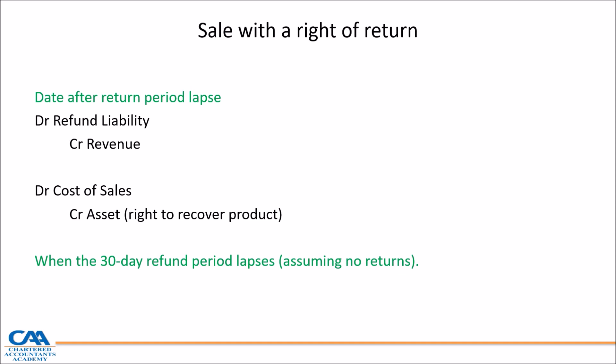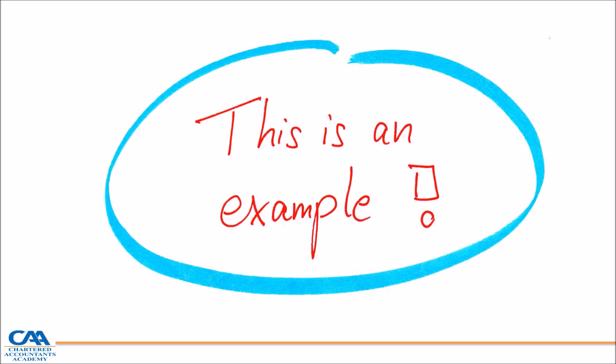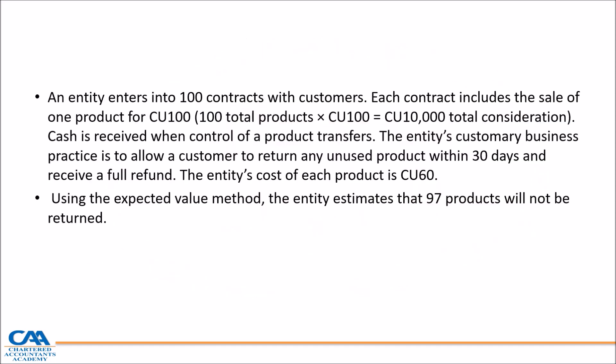We're going to go through an example. An entity enters into 100 contracts with customers. Each contract includes the sale of one product for $100, so total consideration is 100 products × $100 = $10,000. We're told that the entity's customary business practice is to allow a customer to return any unused products within 30 days and receive a full refund. At this point in a test or exam, you should start getting warning signs — you're expecting customers to return within 30 days, so those amounts can't be recognised as revenue.